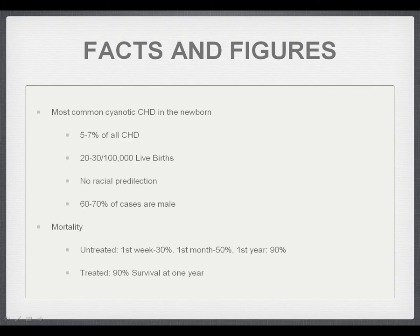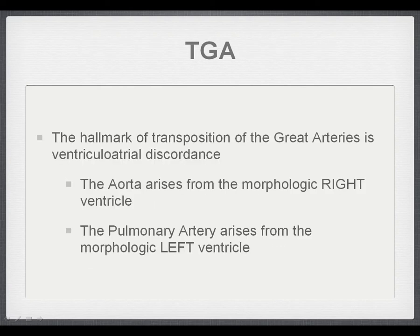It's a difficult topic because it's quite complex, with various different forms. The key thing to remember is that the aorta arises from the morphologic right ventricle and the pulmonary artery arises from the morphologic left ventricle in transposition. I use the word 'morphologic' because the side of the ventricle — the anatomic right and left — can be quite variable, and deciding which chamber is the right or left ventricle can be difficult and is one of the more important things to assess.